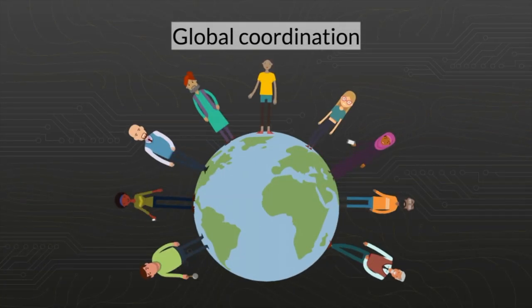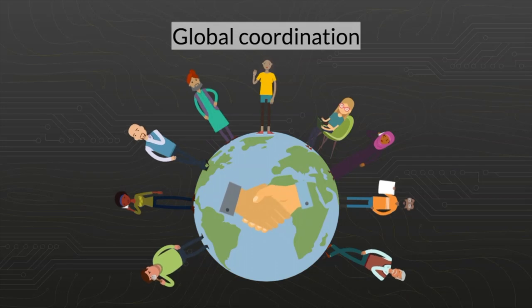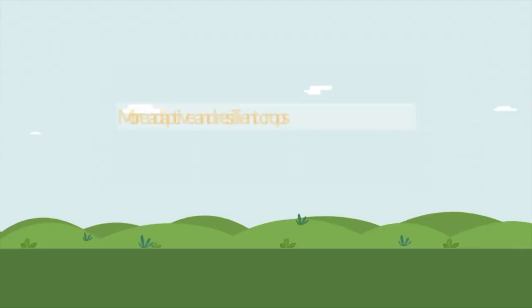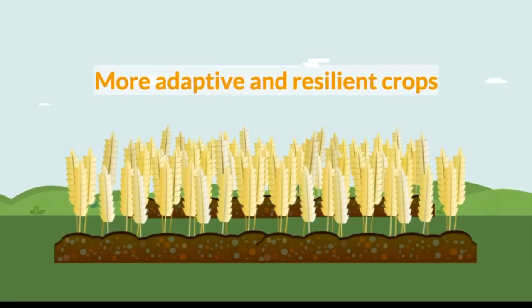There is a significant opportunity and need to improve the global coordination of crop modeling efforts in agricultural research. This will in turn greatly improve the world's ability to develop more adaptive, resilient crops and cropping systems.